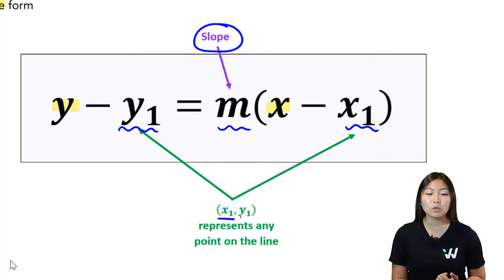And x1, y1 as a pair represents any point on the line. So as long as I have a point on the line, for example maybe negative 1, 4 is on the line, then I can use that to come up with the point-slope form equation.